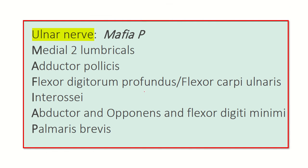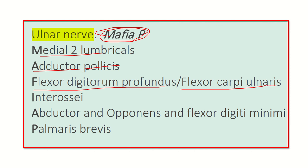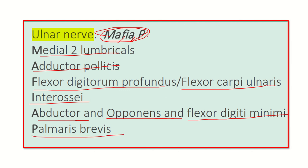There is a mnemonic: MAFIA P. M is for medial two lumbricals, A is for adductor pollicis, F is for flexor digitorum profundus and flexor carpi ulnaris, I is for interossei — palmar and dorsal interossei — and A is for abductor, opponens and flexor digiti minimi, and P is for palmaris brevis.